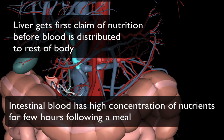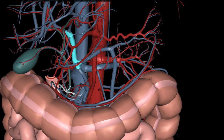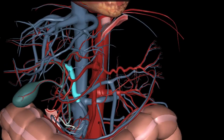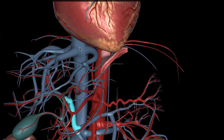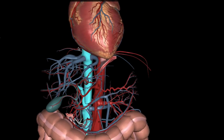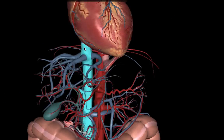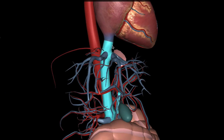Once this blood has been further processed, it goes back into the hepatic vein and gets emptied out into the inferior vena cava, where it is then fed into the right atrium of the heart.